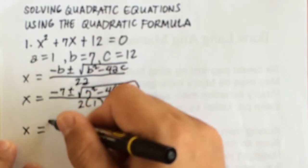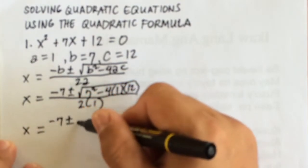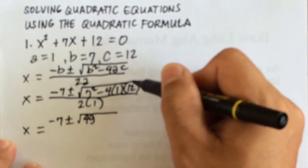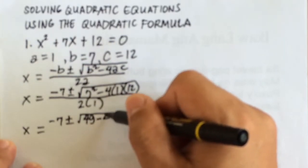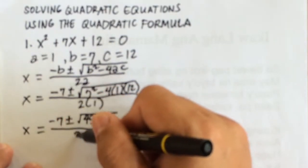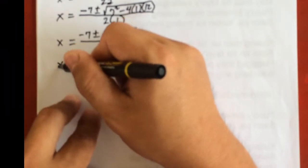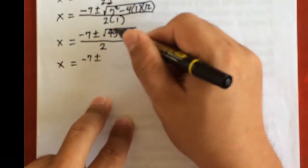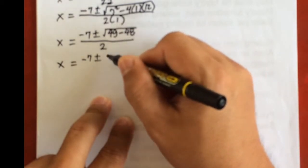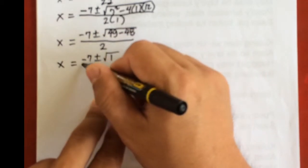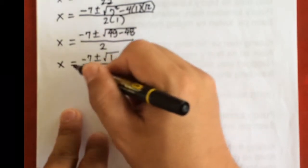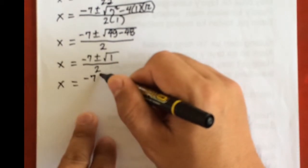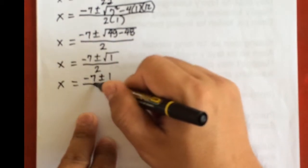So x equals negative 7 plus and minus the square root of 49 minus 48, over 2. Since 49 minus 48 equals 1, we have the square root of 1 over 2. The square root of 1 is 1, so x equals negative 7 plus and minus 1, over 2.